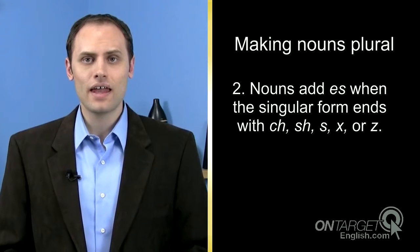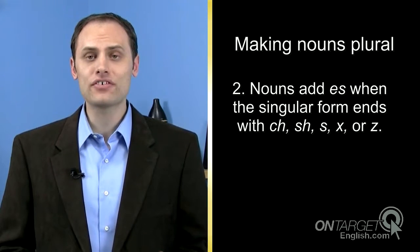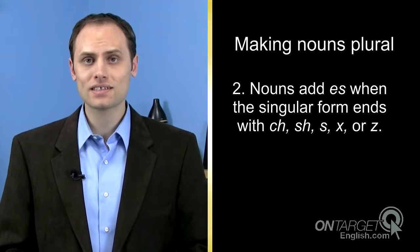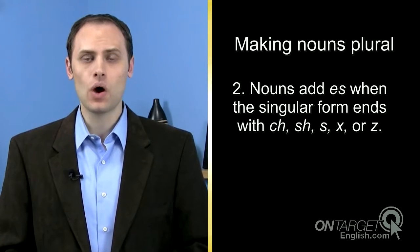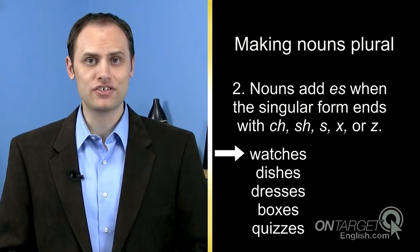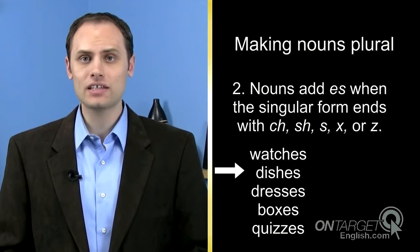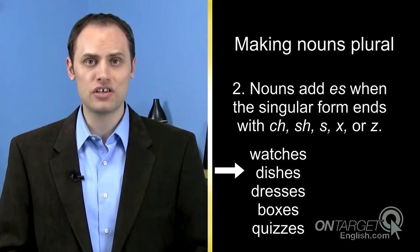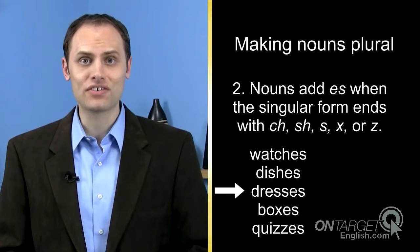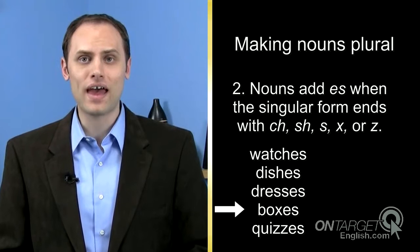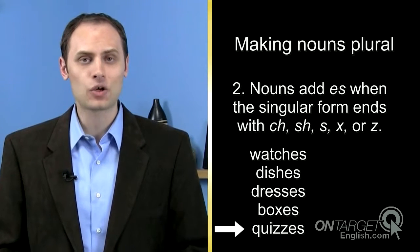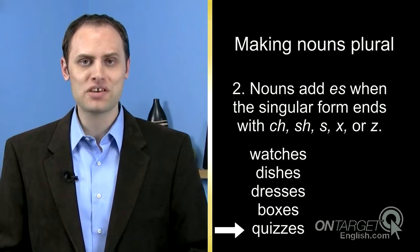Second, nouns add -es when the singular form ends with ch, sh, s, x, or z. Watch ends with ch and becomes watches. Dish ends with sh and becomes dishes. Dress ends with s and becomes dresses. Box ends with x and becomes boxes. And quiz ends with z and becomes quizzes.